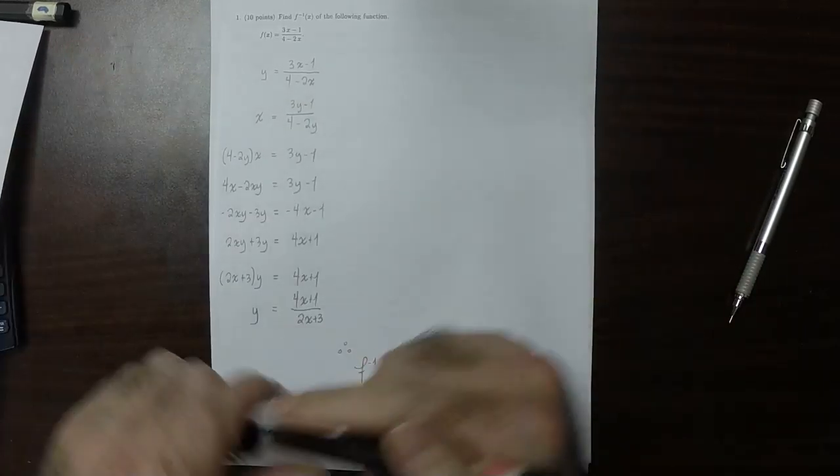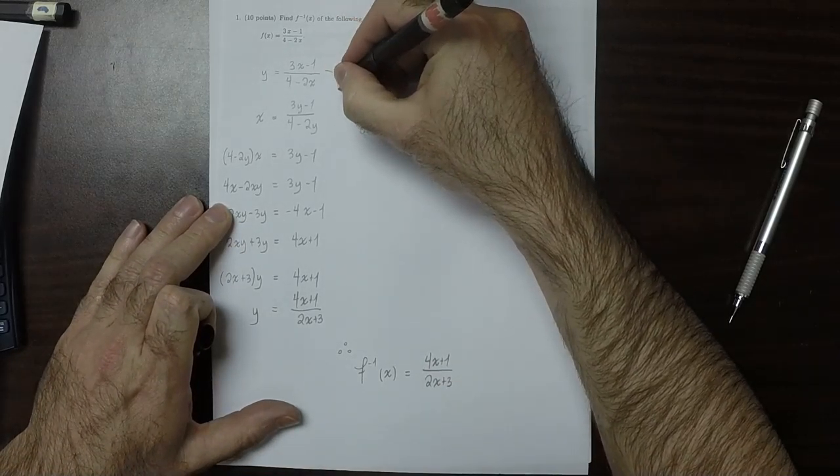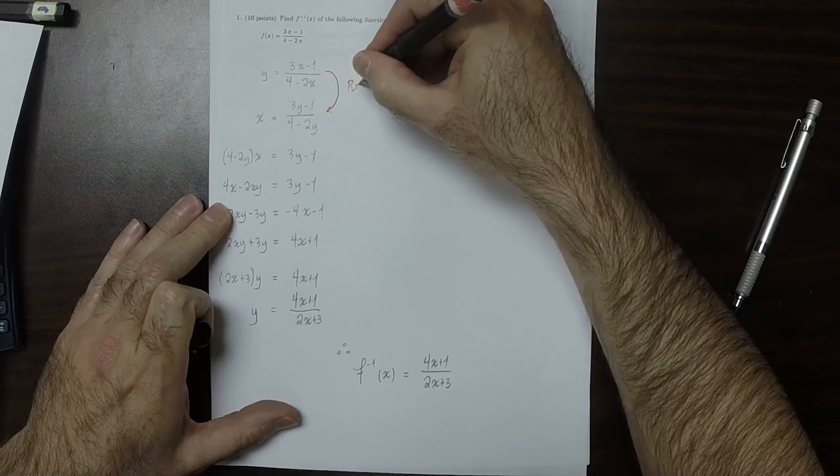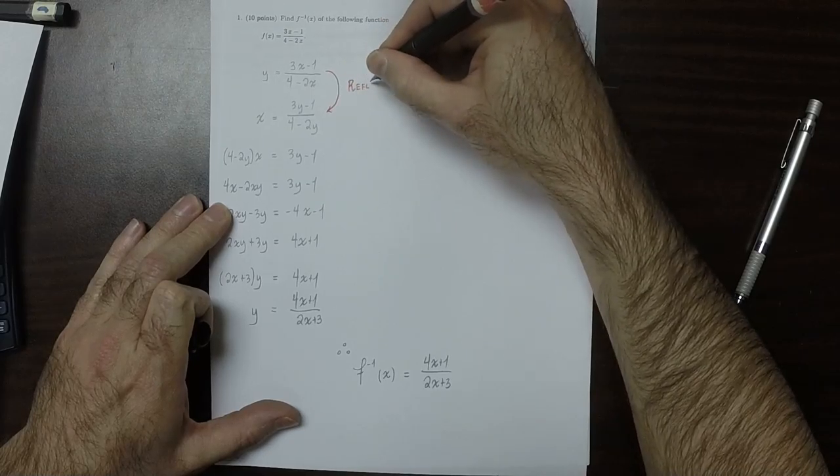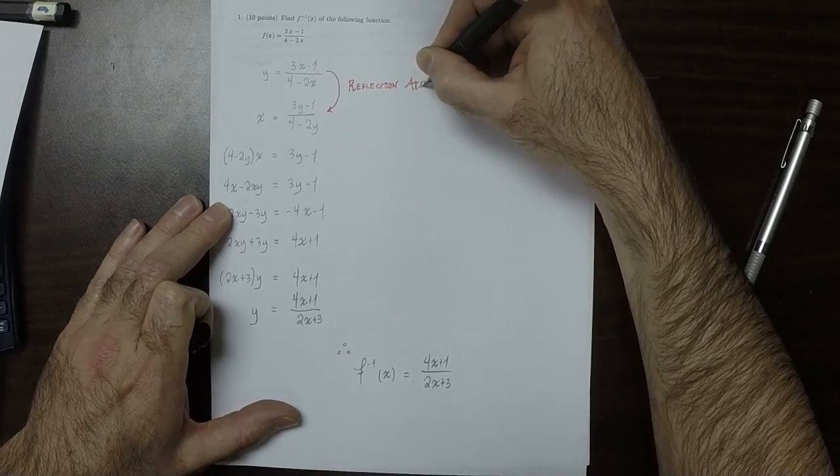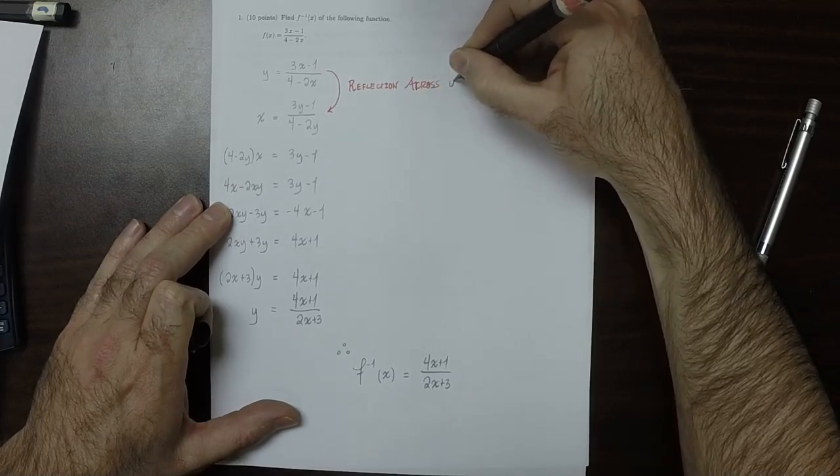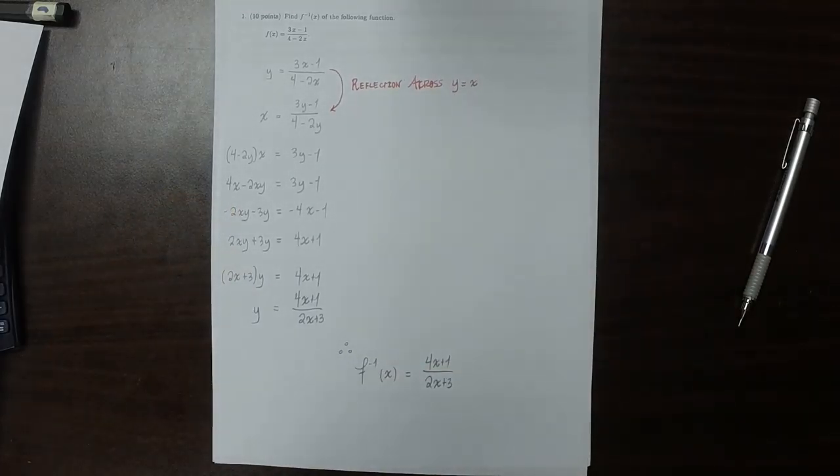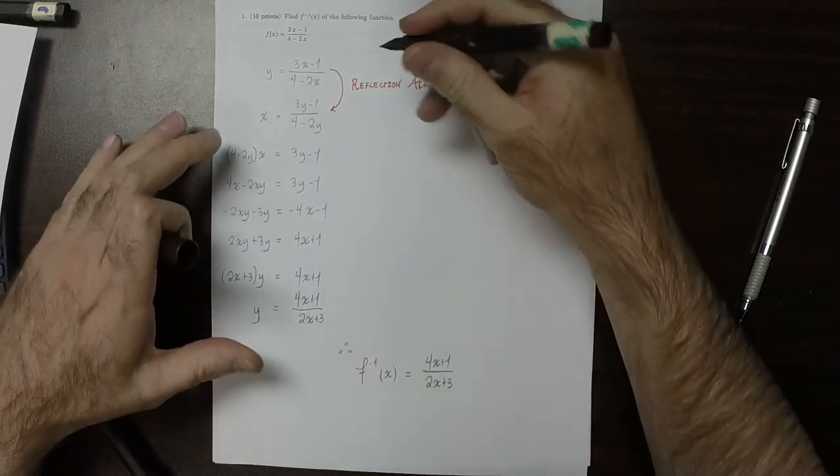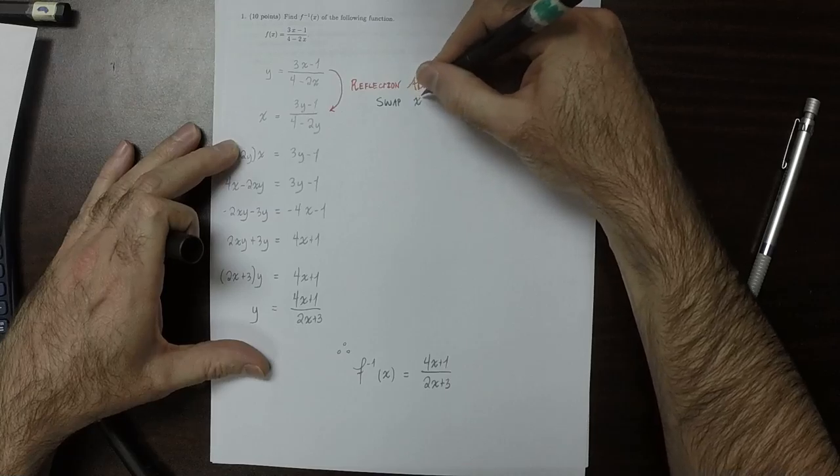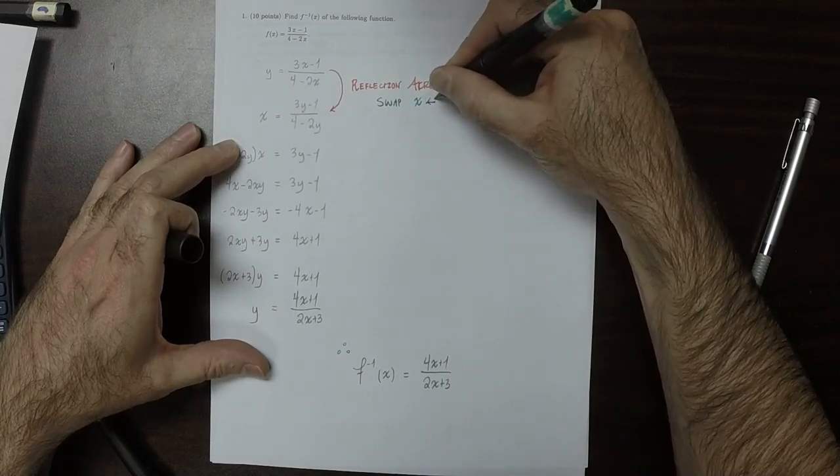So just as a reminder, this step right here is the critical step. This is the reflection across y equals x. That's the geometry of it. And the analytic part is that you're swapping x with y.